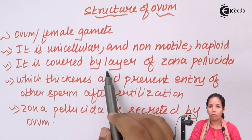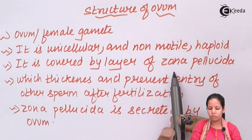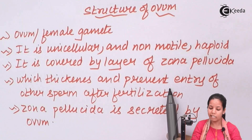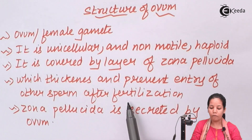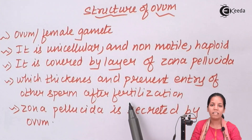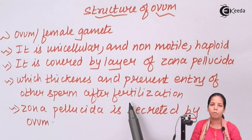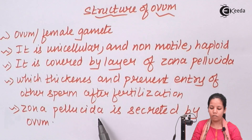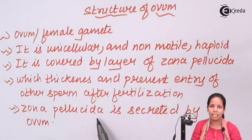It is covered by a layer called zona pellucida. This layer thickens and prevents the entry of other sperms after fertilization has been done. So once a particular sperm and a particular ovum have fertilized — the one that is fastest and reaches first — the rest of the sperms are eventually killed. Zona pellucida is secreted by the ovum itself.